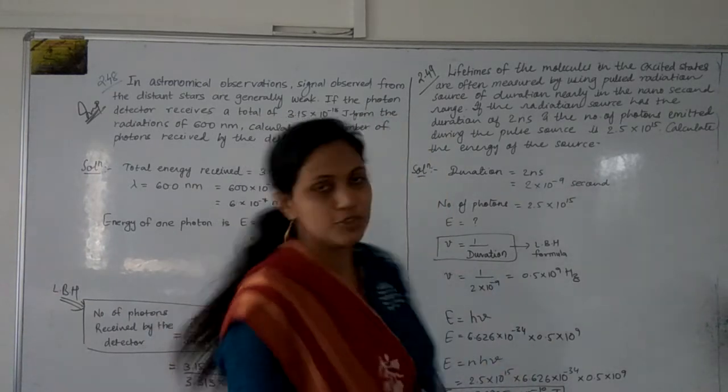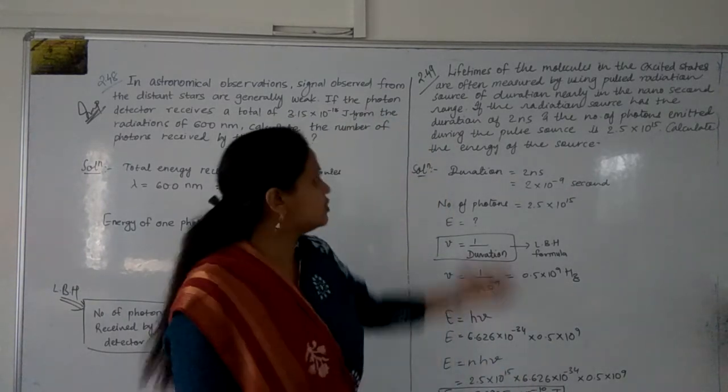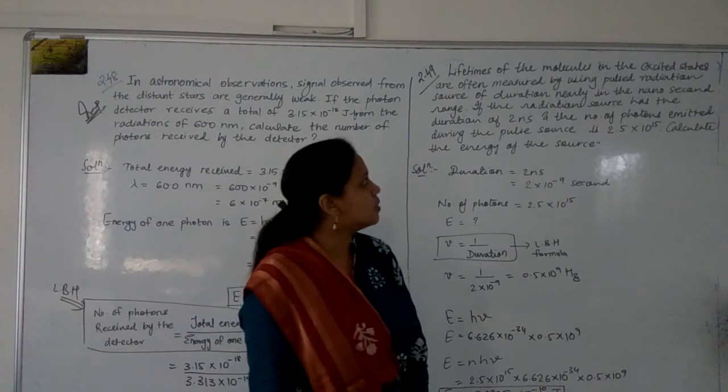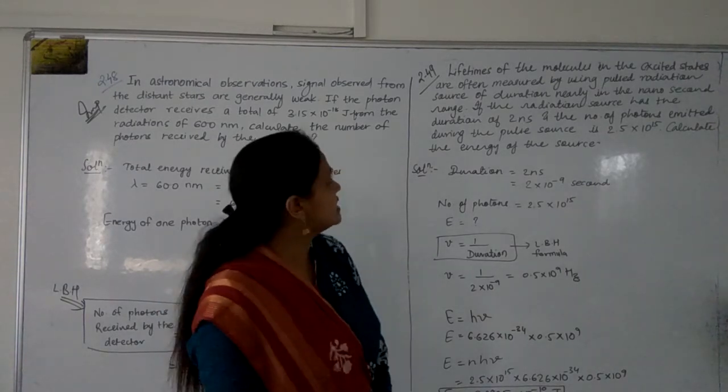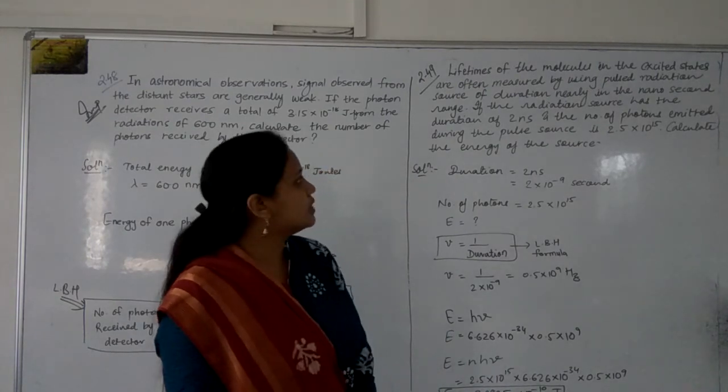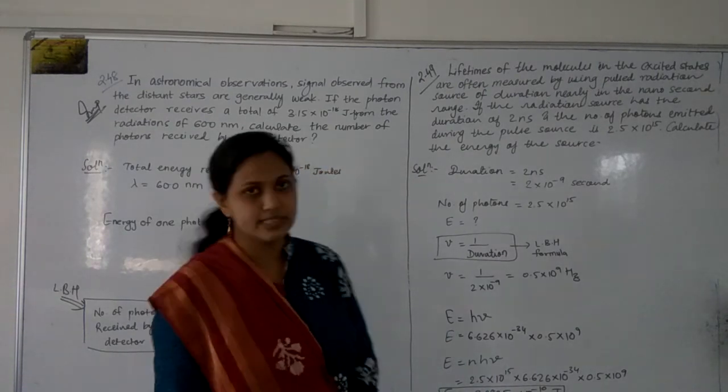So we have numerical number 2.49. First, we are going to see - in this it is written that lifetime of the molecules in the excited states are often measured by using pulse radiation source of duration nearly in the nanosecond range.